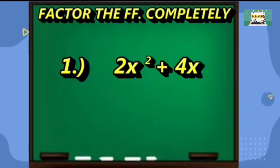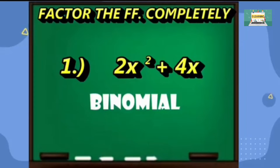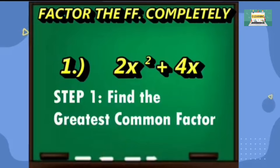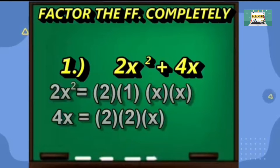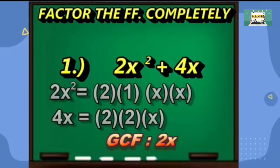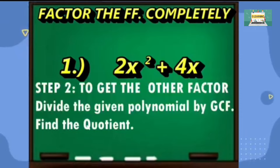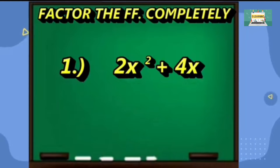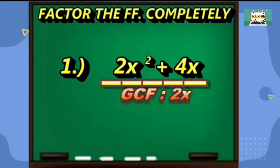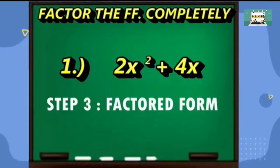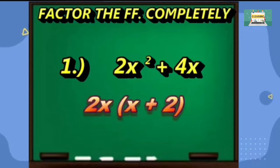Factoring the following completely. Number one, given 2x squared plus 4x, which is a binomial. Step one, find the greatest common factor of each term. 2x squared can be factored as 2 times x times x, and 4x can be factored into 2 times 2 times x. The common monomial factor for these two terms will be 2x, and that is the greatest common factor. Step two, to get the other factor, divide the given polynomial by GCF and get the quotient. So 2x squared plus 4x divided by 2x gives the quotient x plus 2. Step three, write the factored form as 2x times the quantity of x plus 2.